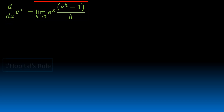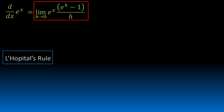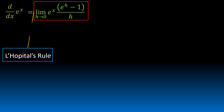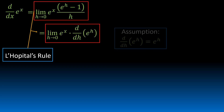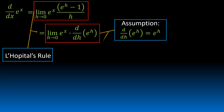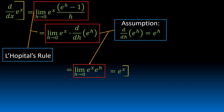We get the derivative with respect to x of e to the x equal to that. We do L'Hôpital's rule and we get that. Then we're going to assume that the derivative with respect to a variable of e to that variable is equal to e to that variable — or it's going to be equal to itself.